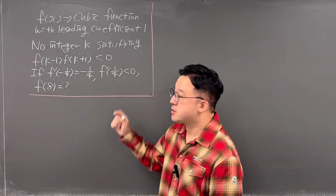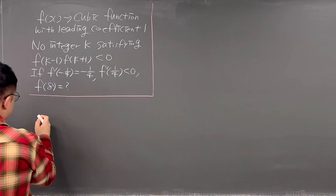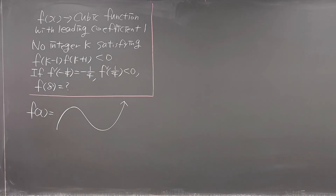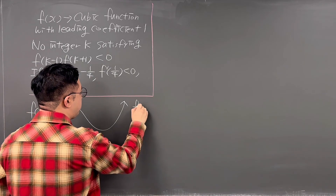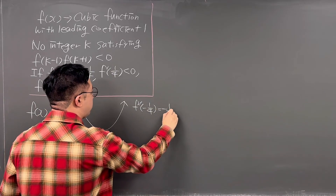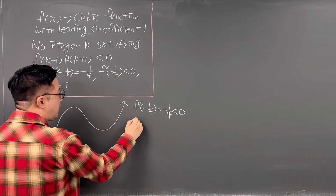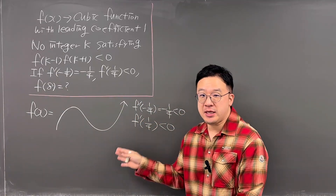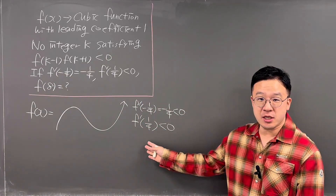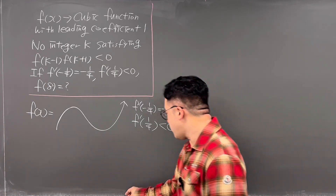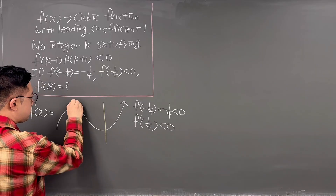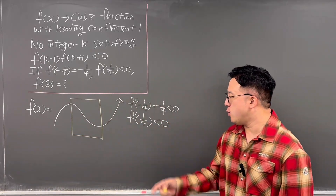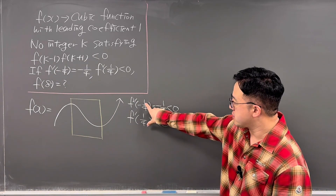So f(x) is a cubic function with a leading coefficient of positive 1, so your f(x) should be looking just like this. We already know f'(-1/4) = -1/4, which is less than 0, and f'(1/4) is also less than 0. So f(x) is decreasing at x = -1/4 and x = 1/4, which means we can only look at this interval of f(x) — this is the only area we're looking at, since both values lie in this interval.